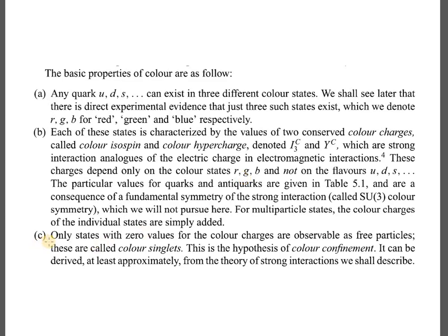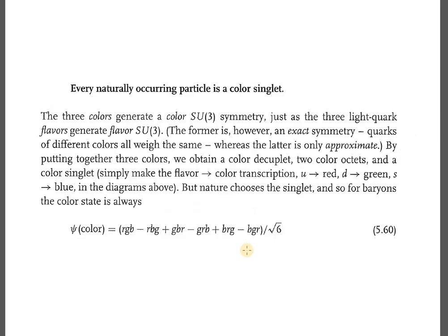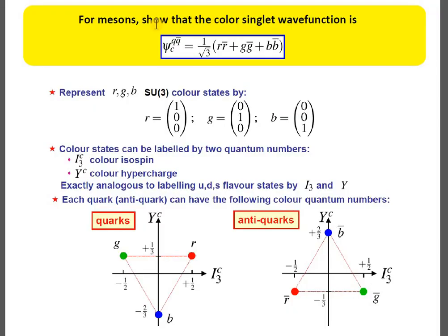The third very important property is that only states with zero values for the color charges are observable as free particles — these are called color singlets. This is the hypothesis of color confinement, which is predicted by QCD — quantum chromodynamics — the theory of strong interactions. Every naturally occurring particle is a color singlet, and with this, the color singlet wave function for mesons is a specific combination.